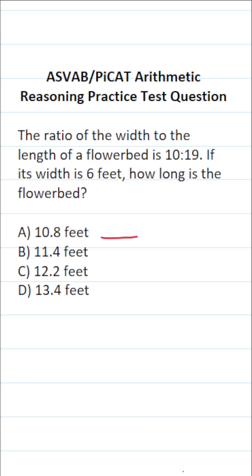I'm going to use a proportion to solve this one. On the left-hand side of the proportion, I'm going to fill in this ratio. This ratio is the width to the length of the flowerbed.